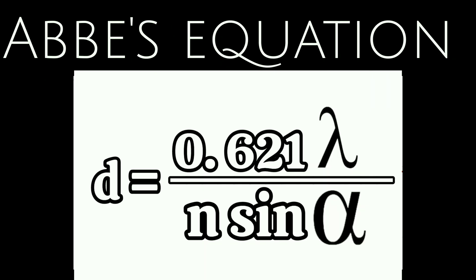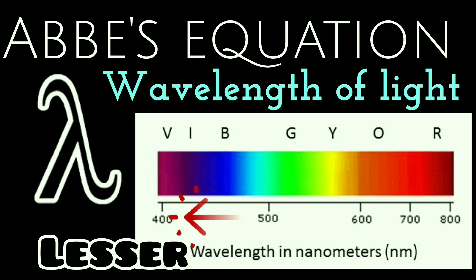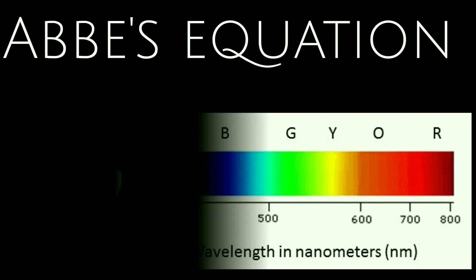We can write the Abbe equation as: limit of resolution equals 0.61 lambda divided by n sin alpha. Lambda denotes the wavelength of light. For enhancing resolution we need a shorter wavelength. For best resolution, the specimen is illuminated with blue light of 450 nanometers. Even shorter than that, there is ultraviolet light or electron beams — all are effective for improving resolution.